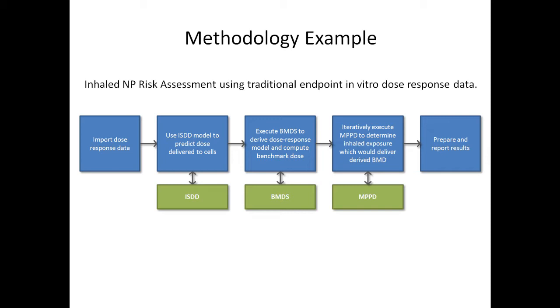Finally, the BMD is extrapolated to an equivalent inhalation exposure using MPPD. MPPD uses lung morphometry data to construct a tree representing the inhomogeneous branching pattern relationship between parent and daughter airways in the respiratory tract. Deposition of inhaled material in each airway is modeled by computing the concentration and flow at the proximal and distal end of each airway, and applying mass balance as inhaled air flows from parent to daughter airways during inhalation and from daughters to parent during exhalation.